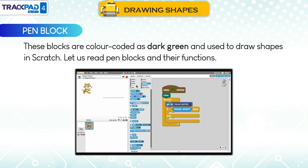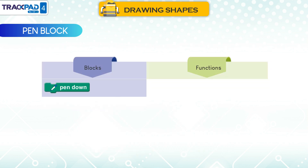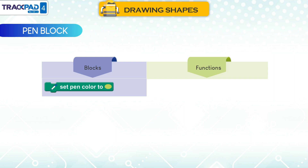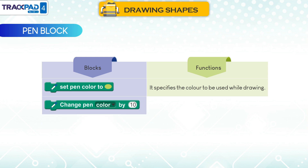Let us read pen blocks and their functions. Pen Down: it places the pen in the down position. Pen Up: it disables drawing operations by lifting the pen. Set Pen Color to: it specifies the color to be used while drawing. Change Pen Color by 10: it modifies the color of a line.